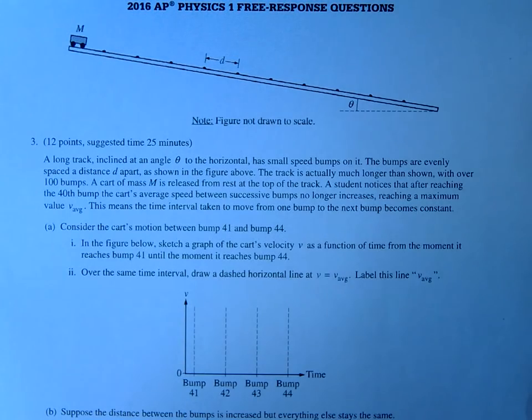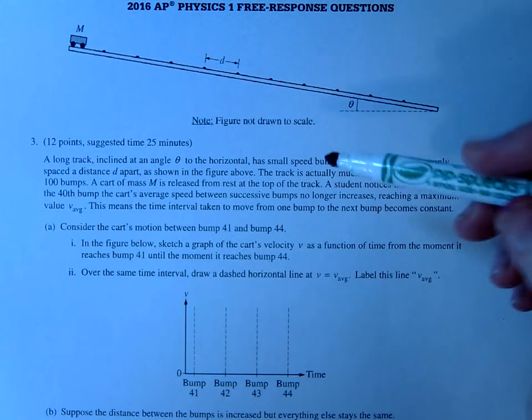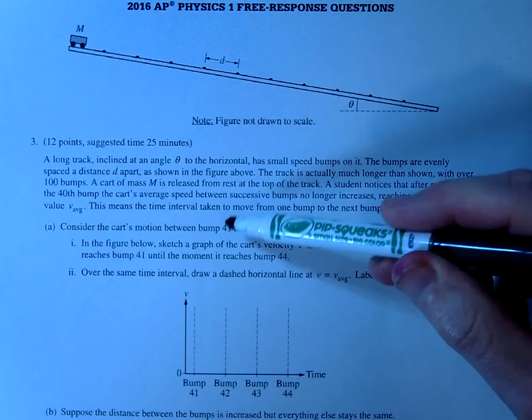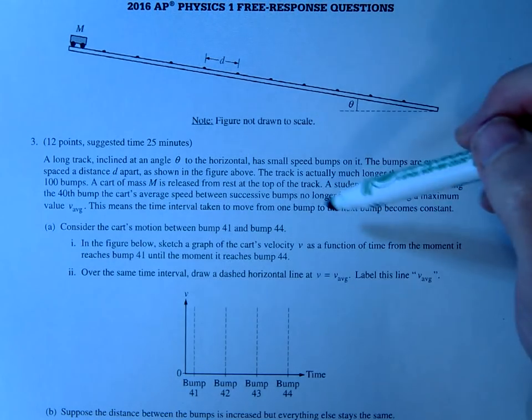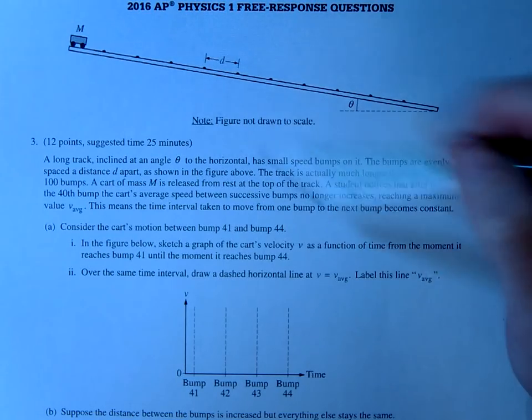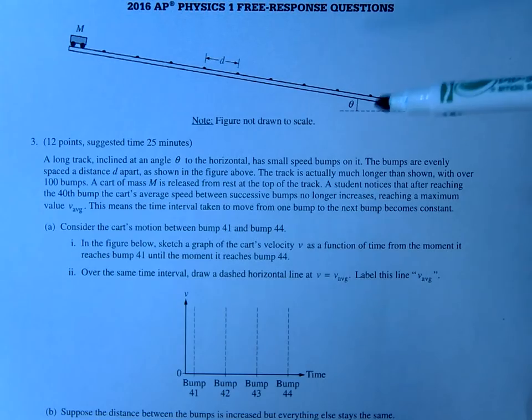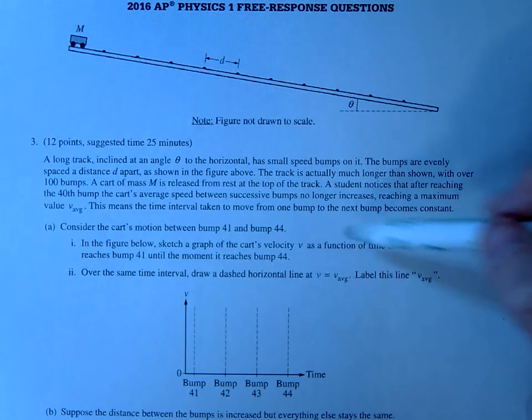This is the 2016 AP Physics 1 free response question number 3. This is another ramp question. In this one they have some bumps, and they say that when it reaches bump number 40 or 41, it no longer increases in speed between bumps. So it keeps getting faster and faster, and then reaches a point where the average speed no longer increases.